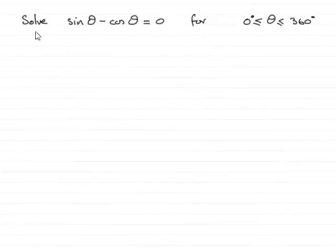Hi, now in this example what we've got to do is solve the trig equation sin theta minus cos theta equals 0 for theta greater than or equal to 0 degrees but less than or equal to 360 degrees.